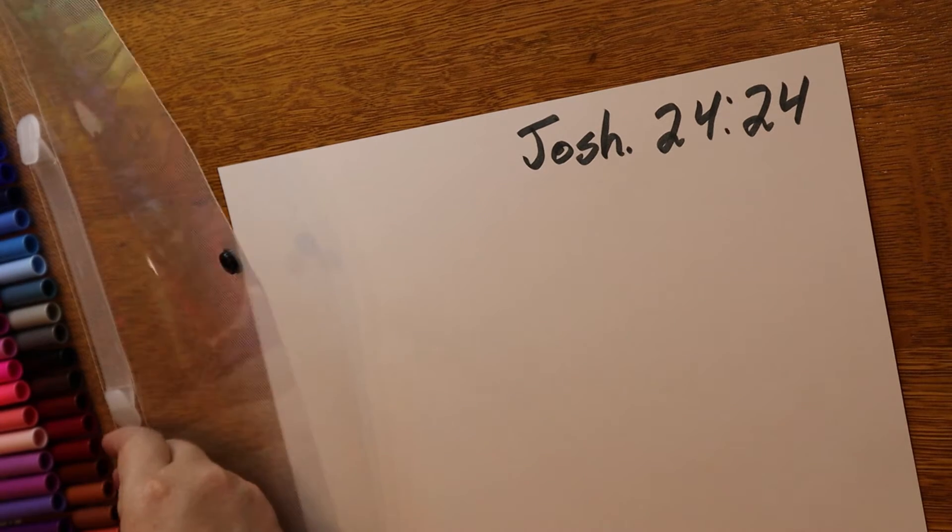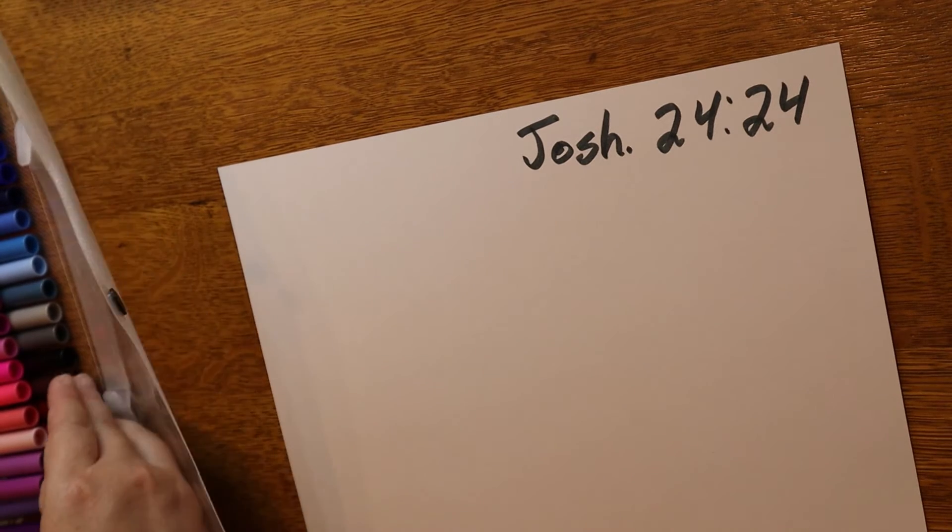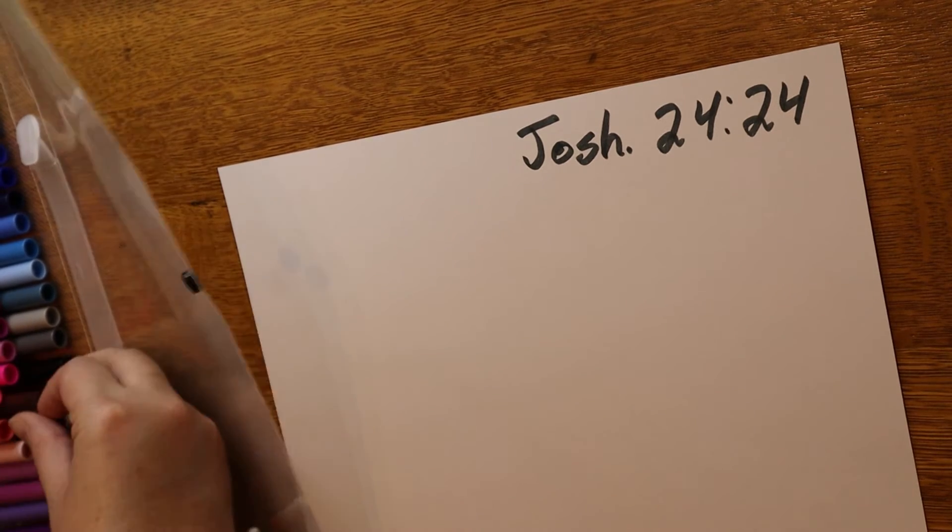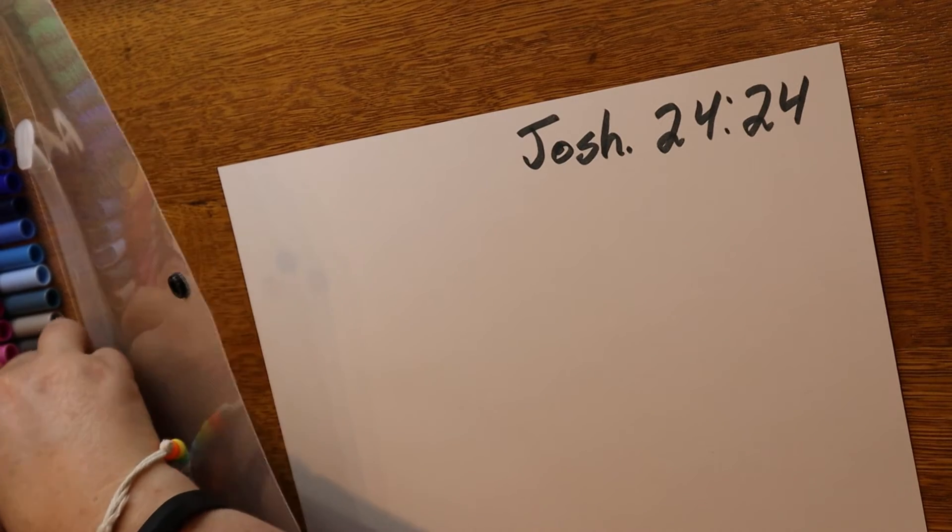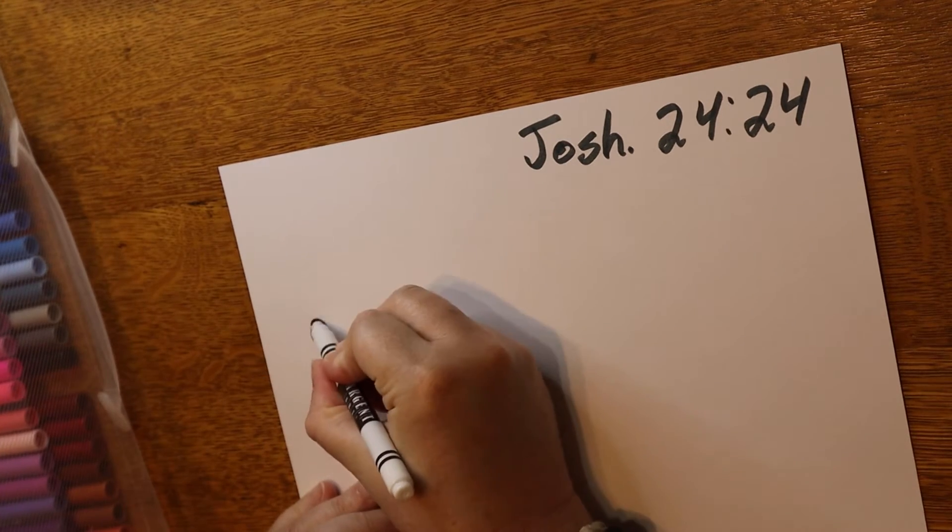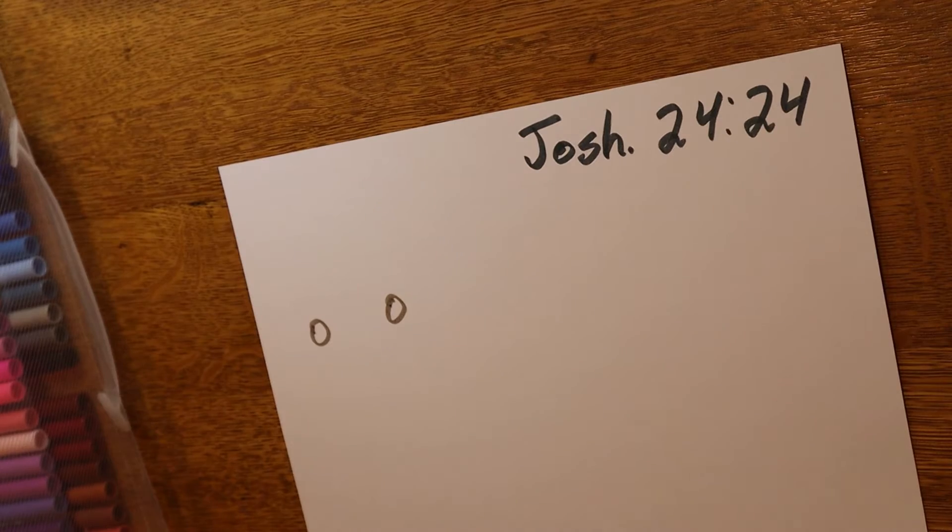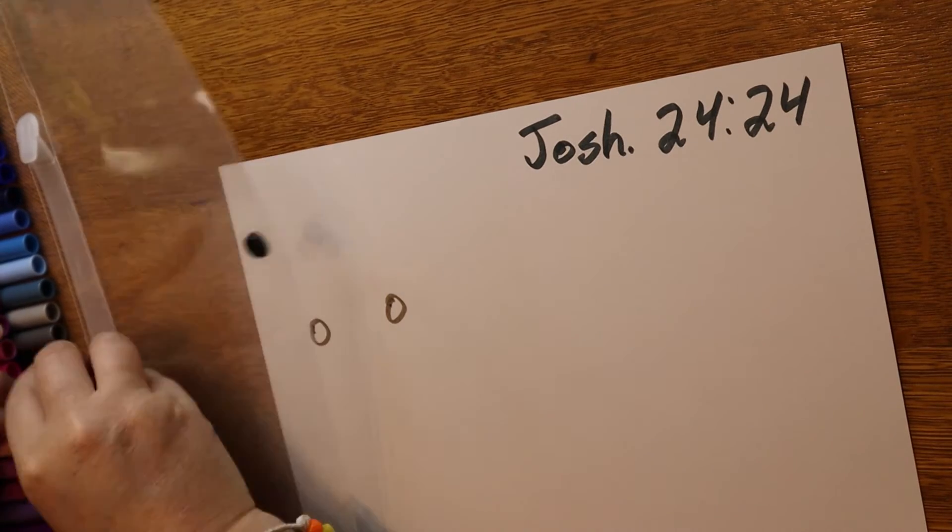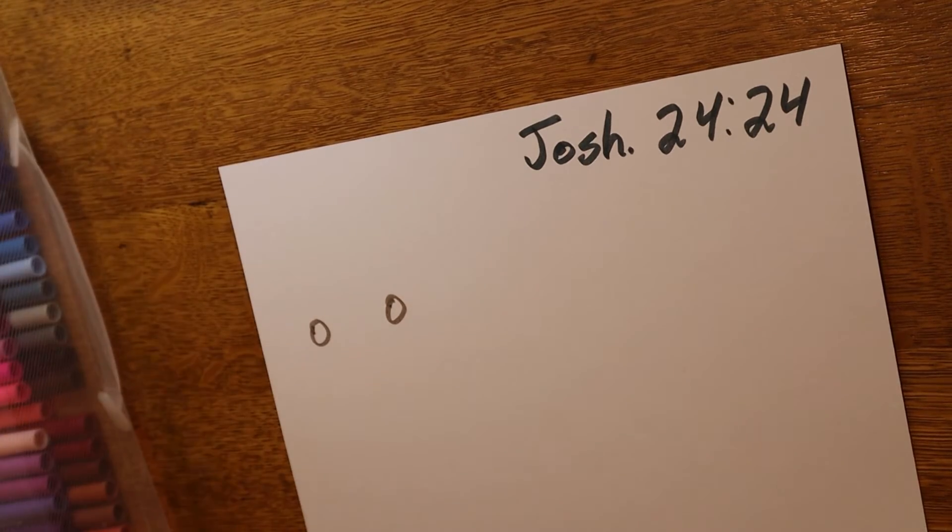Now let's see. The first part of this verse says, 'So the people said to Joshua.' I think for people, I'm going to do a whole bunch of circles to be faces, and I want to do them in a whole bunch of different colors. So I'm just going to pick a whole bunch of different colors. We're going to make a large group of people because the crowd here was actually quite large.